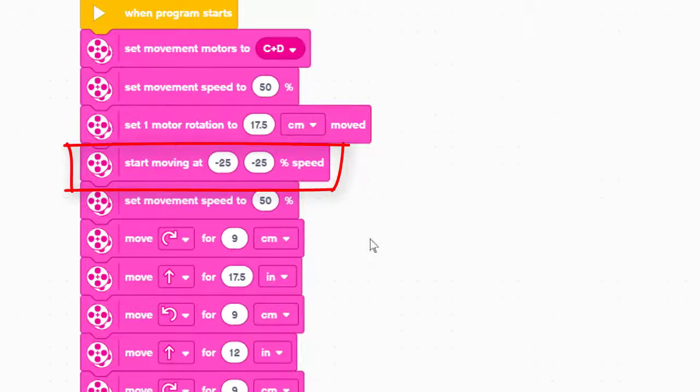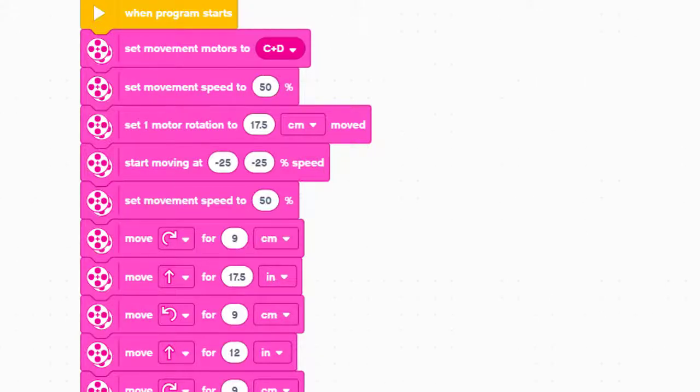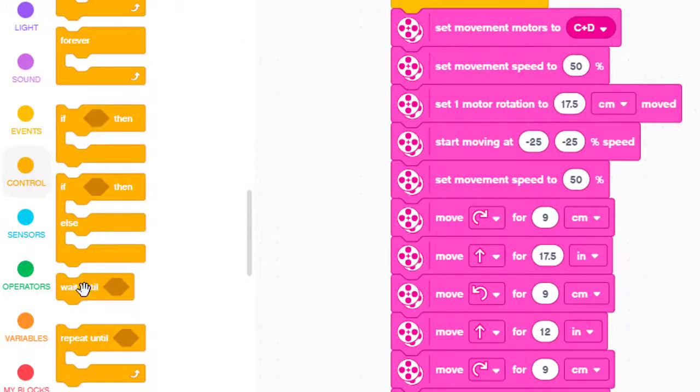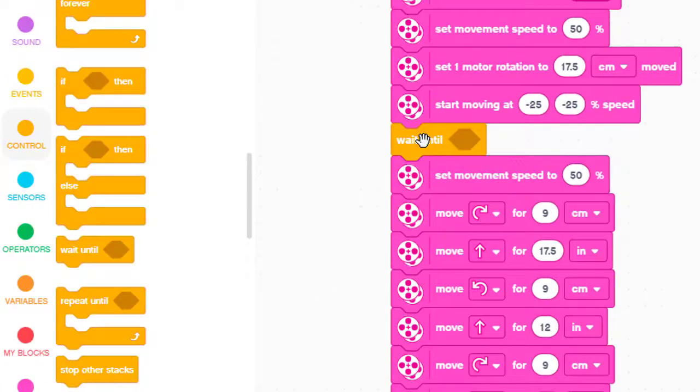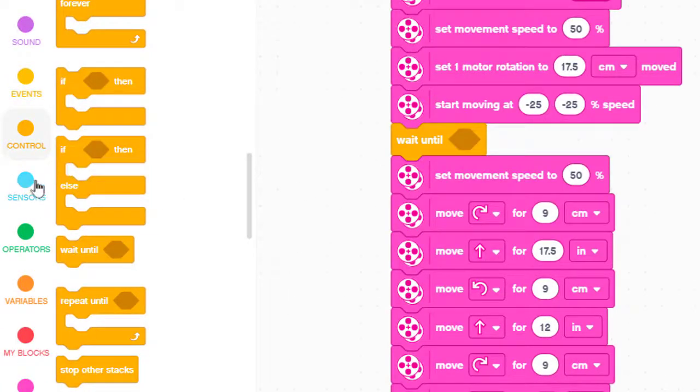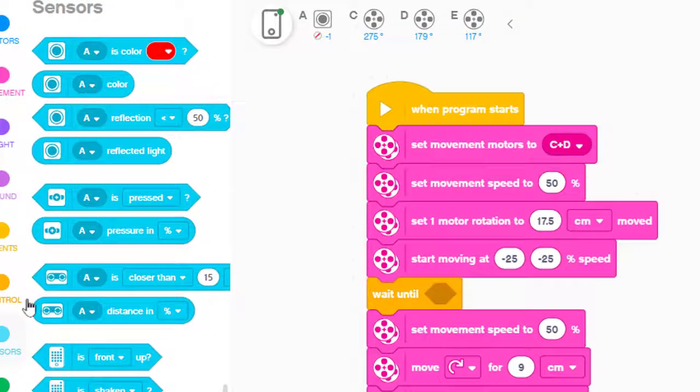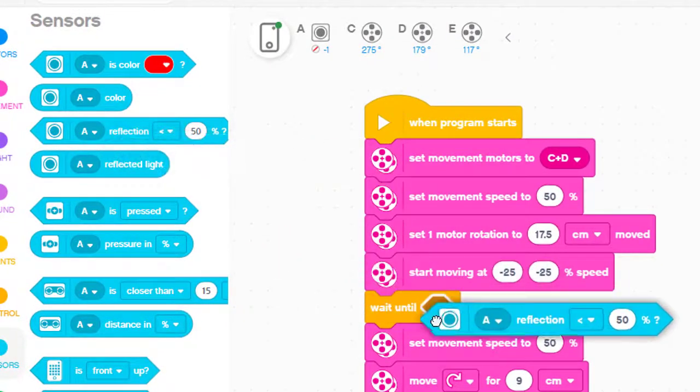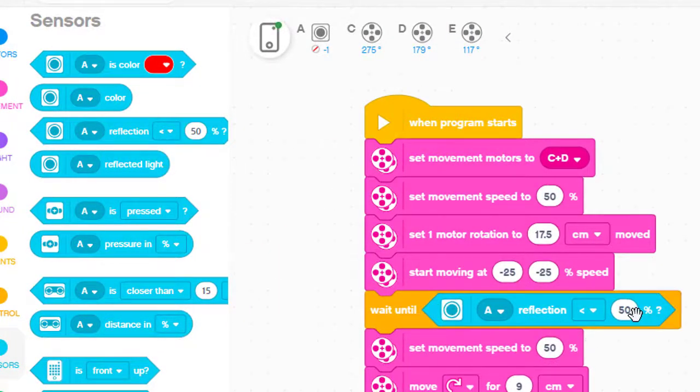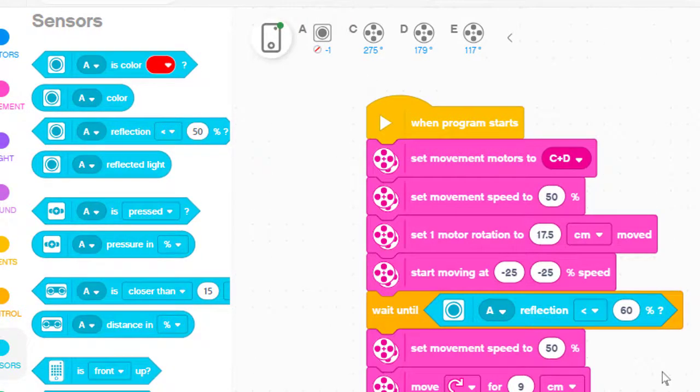Once the movement starts, we need the program to wait until the color sensor detects the road. We add a wait until block to do this. We then add a sensor that becomes true when the amount of reflection drops below 60%. This will cause the robot to keep moving back until the sensor sees the road.